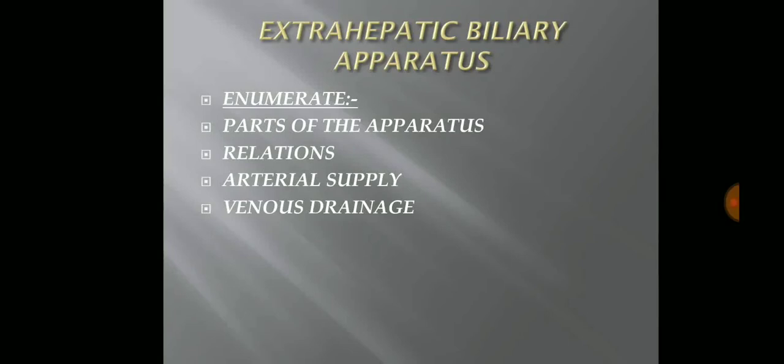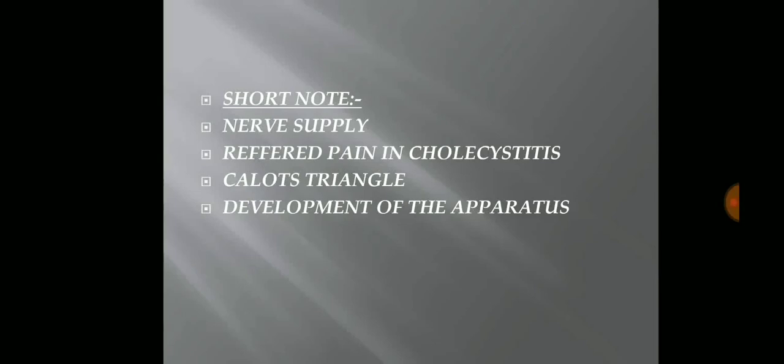Extrahepatic biliary apparatus. The enumerate questions are: parts of the apparatus, relations, arterial supply, and venous drainage. However, the relation is the most important one out of these. Short notes can be expected on: nerve supply, referred pain in cholecystitis — which is the most important and has been asked in semesters as well as in the prof and most exams — Calot's triangle, and the development of the apparatus, which are less important.